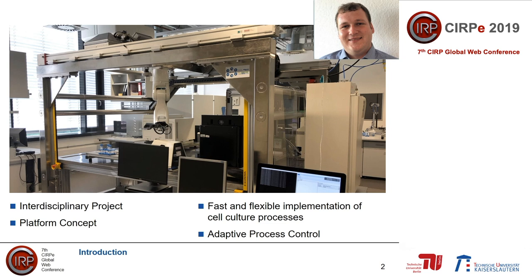The idea is to build a platform for cultivation of induced pluripotent stem cells. It will enable biologists to implement and test new automatic processes for the cultivation of cells without concerning themselves with the engineering part of such a project. In the picture, you see a robot responsible for all material transport within the ICELF Factory, a centrifuge in the back, a microscope, and an incubator.